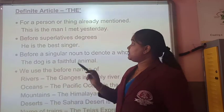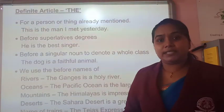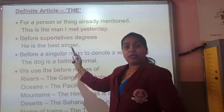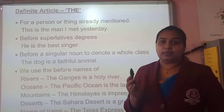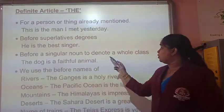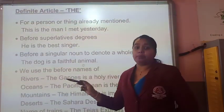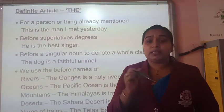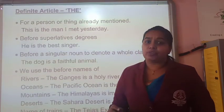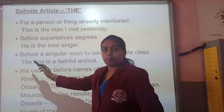We also use 'the' before superlative degrees — 'the weakest person', 'the greatest emperor', 'the best singer'. These are superlative forms of adjectives. Before a singular noun representing a whole class: 'The dog is a faithful animal.' When speaking about a whole group: 'The class 8C is very obedient.' So when I speak about the whole group, I use the definite article 'the'.